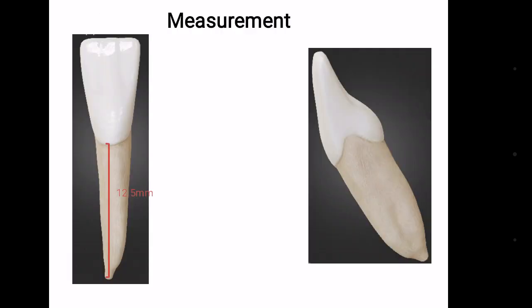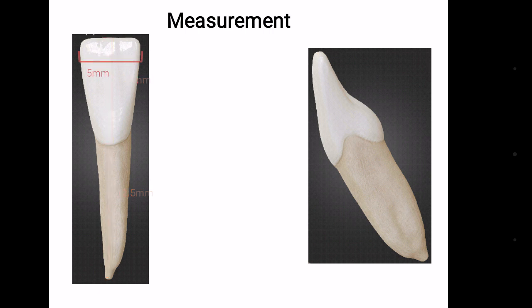The root is 12.5 mm. Crown is 9.5 mm. Mesio-distal diameter is 5 mm and at the cervix it is 3.5 mm. Labio-lingual diameter is 6 mm. Curvature of the cervical line distally is 2 mm and mesially 3 mm.